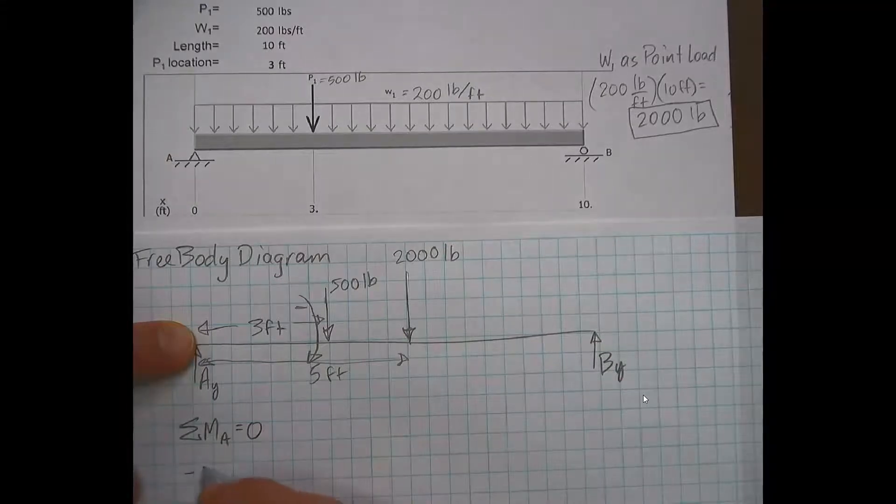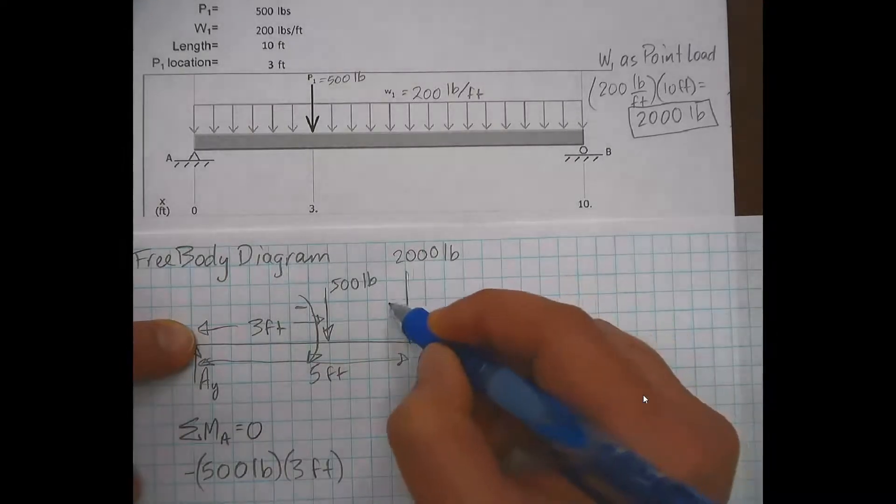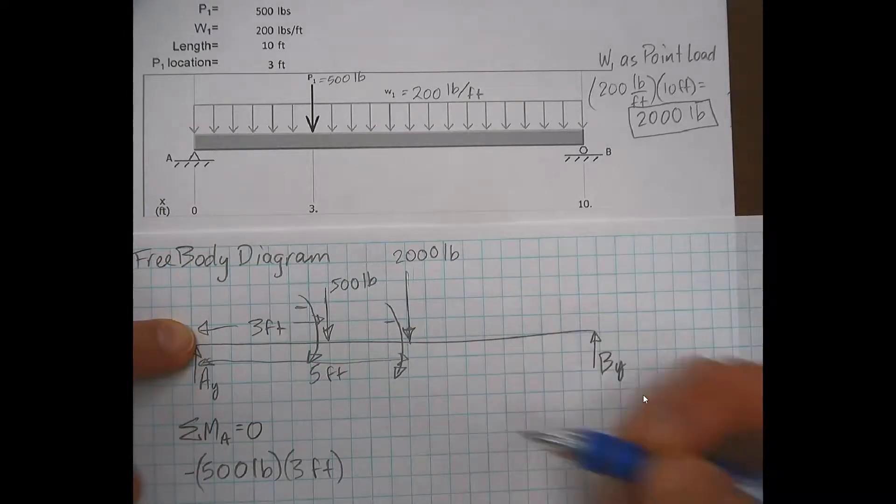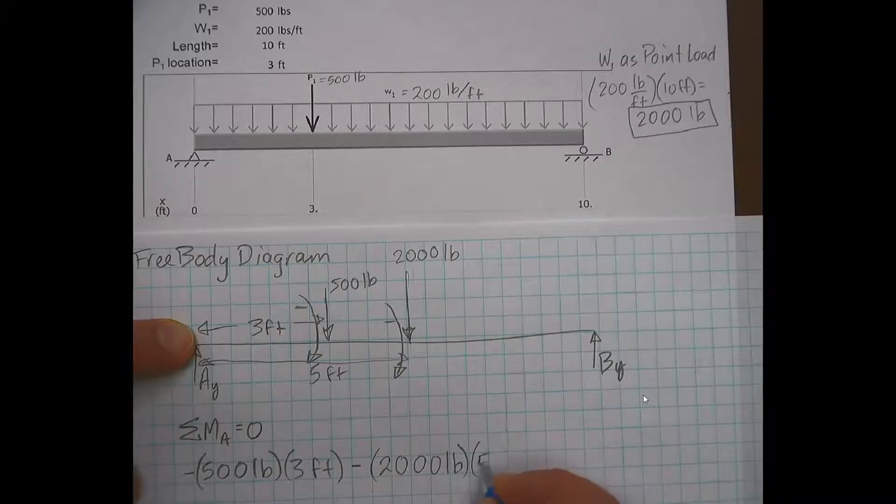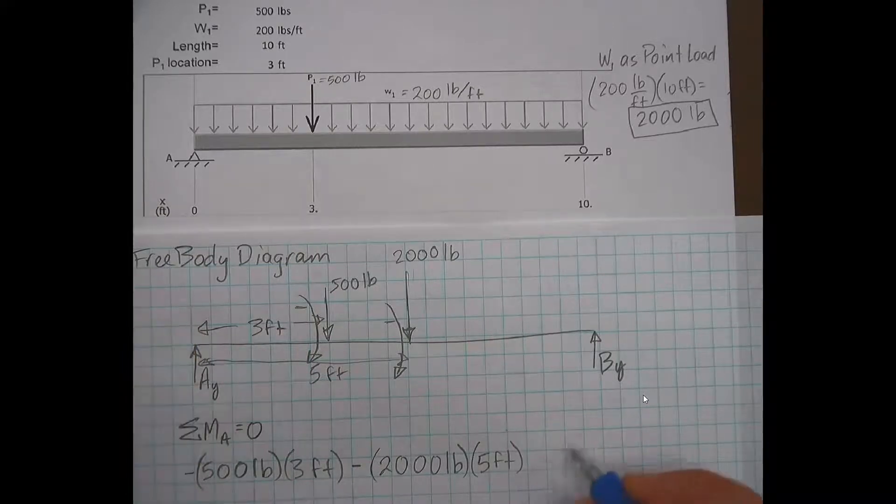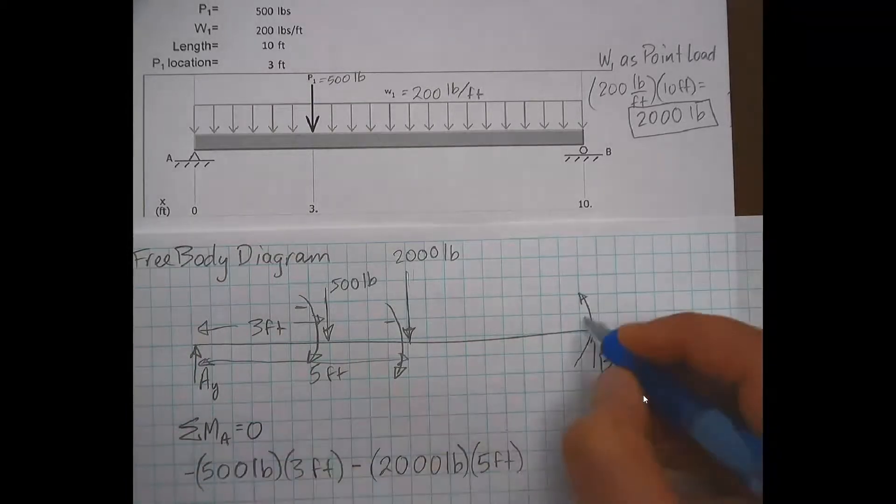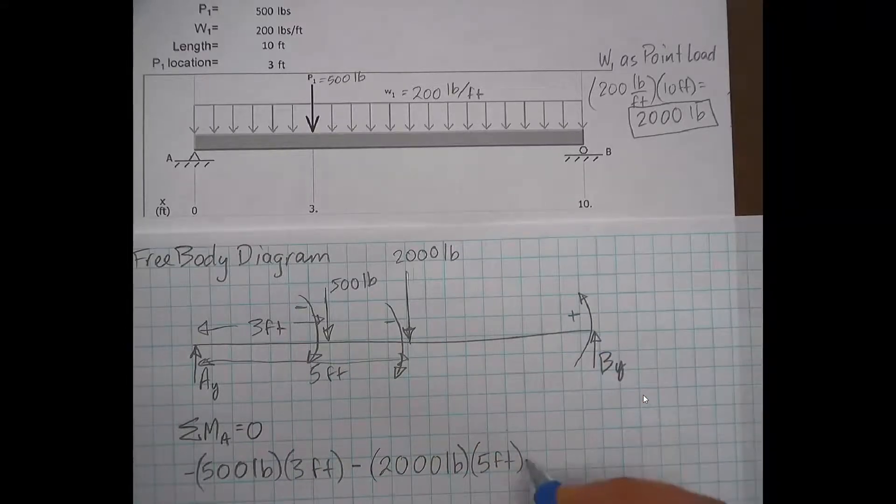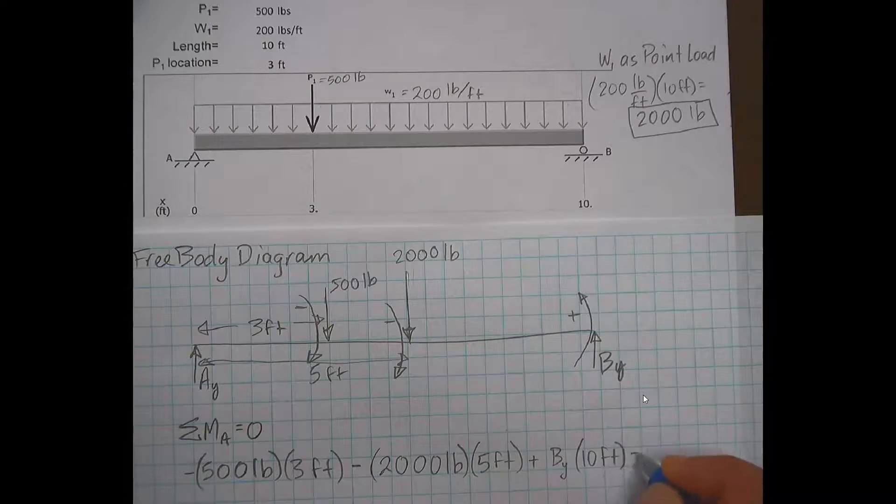So that would be negative 500 pounds times the distance, which is three feet. And then our next load is going to be the 2000 pound one, and it's going to be clockwise as well, so it's going to be negative as well. So that's going to be negative 2000 pounds times the distance there, which is five feet. And then the last one is going to be our unknown reaction force. That's going to make things want to rotate counterclockwise, so that's going to be a positive. So that will be plus BY times the distance there, the full distance, so it's 10 feet. And that will all equal zero.